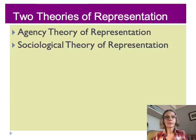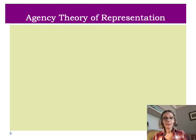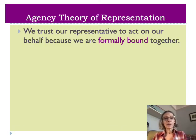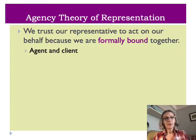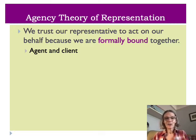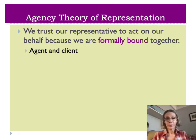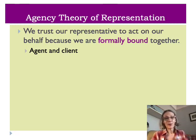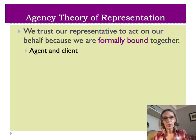Let's start with agency theory of representation. From this perspective, we trust our representatives to act on our behalf because we are formally bound together. They see the relationship between the constituent and the representative as an agent-client relationship. The textbook uses the example of a client and their lawyer — if you're accused of a crime, you hire a lawyer to represent your interests and try to make sure you don't end up convicted.